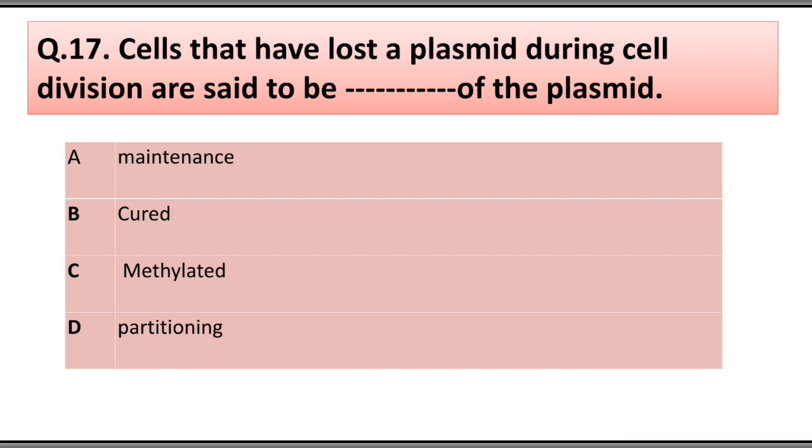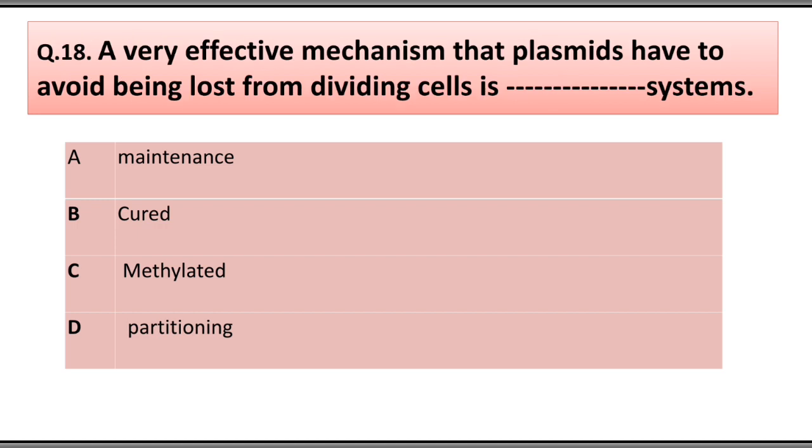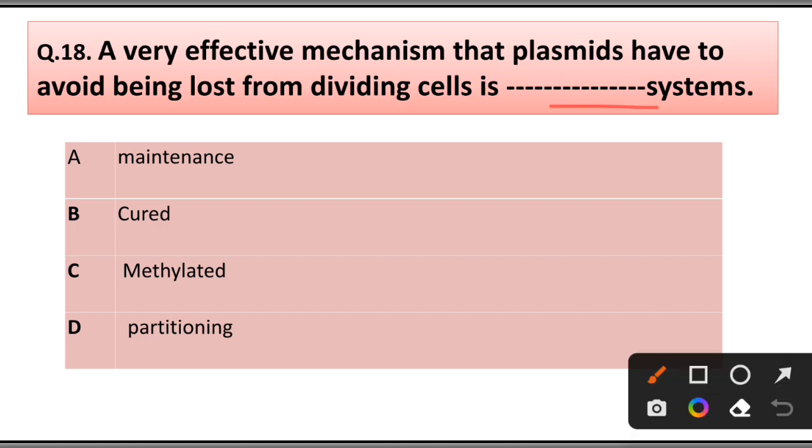Question number 18: A very effective mechanism that plasmids have to avoid being lost from dividing cells is the system: A) Maintenance, B) Cured, C) Methylated, D) Partitioning. Answer is D, partitioning.